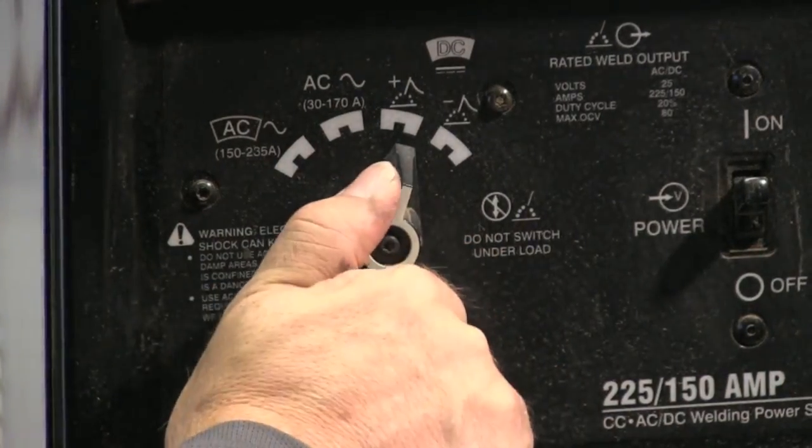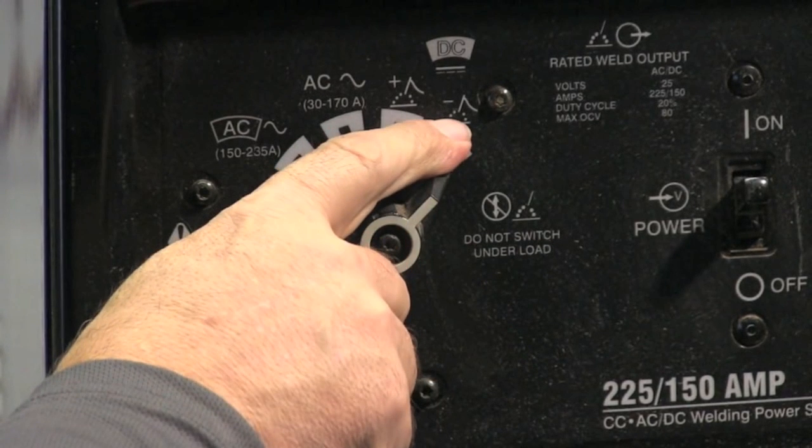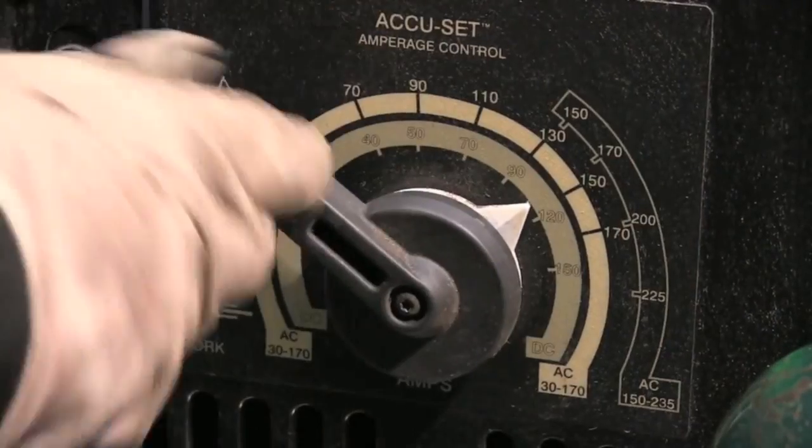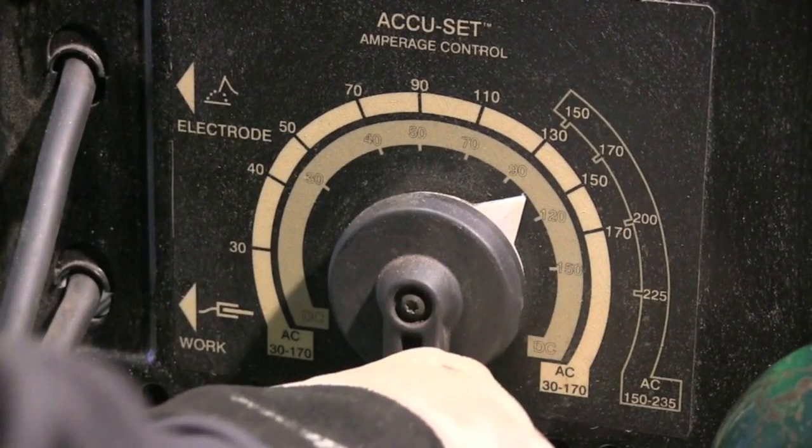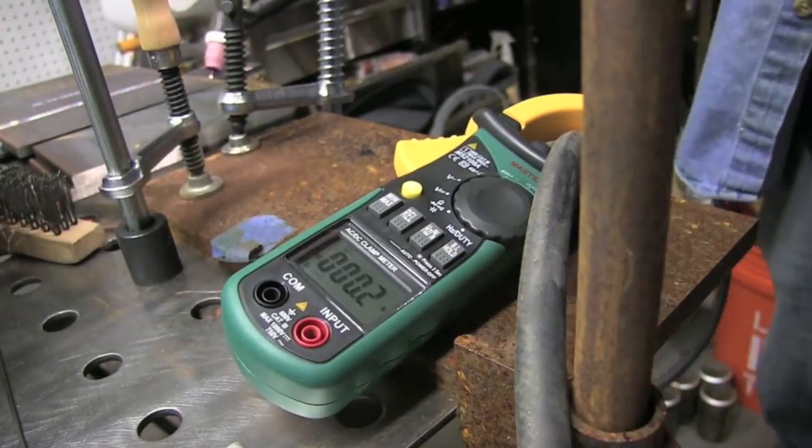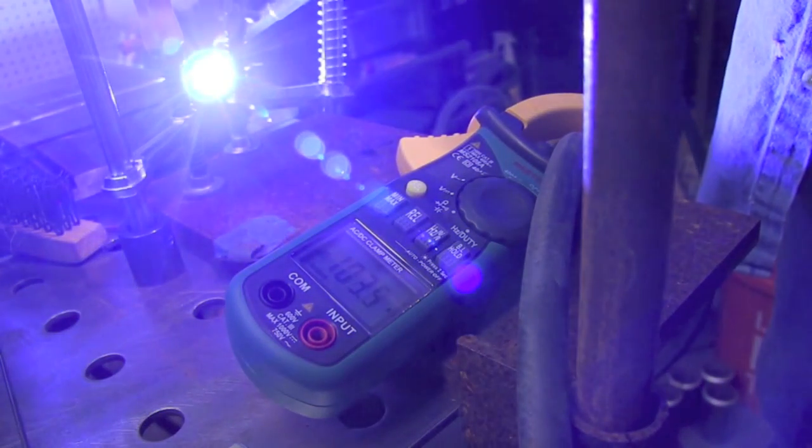You hook your stinger on just like that and you're ready to do scratch start TIG on DC negative, DC electrode negative. Now with this machine, setting the amperage is a little bit of a chore. You can see it says Accu-Set Amperage Control, but it's not that accurate. There's a lot of slop in that handle.